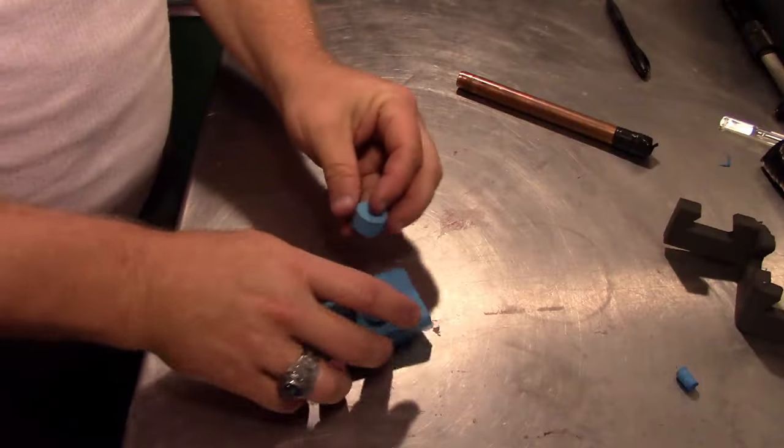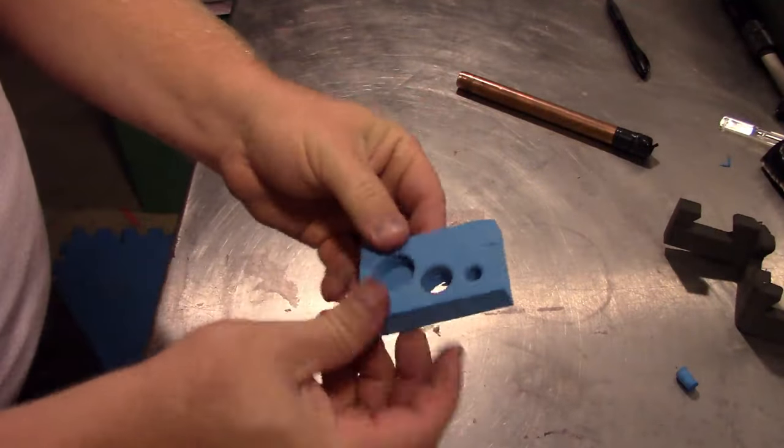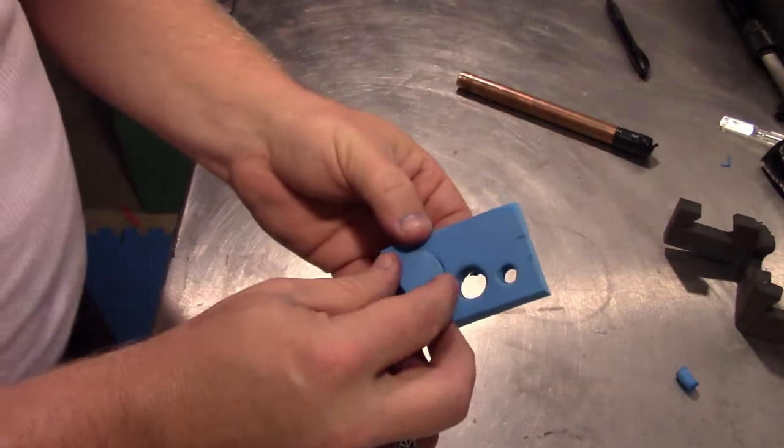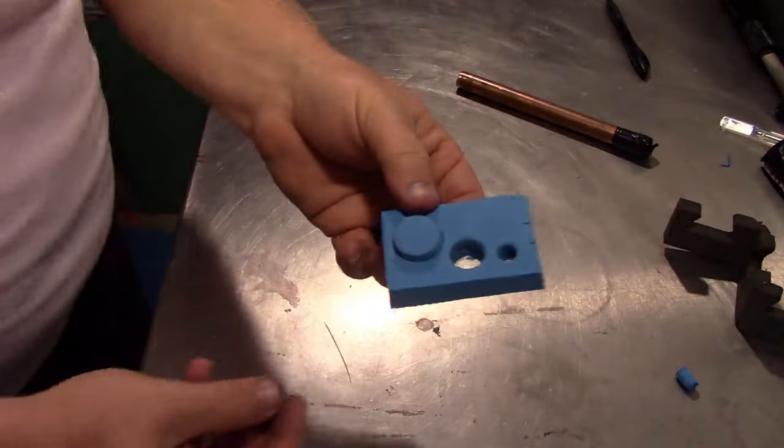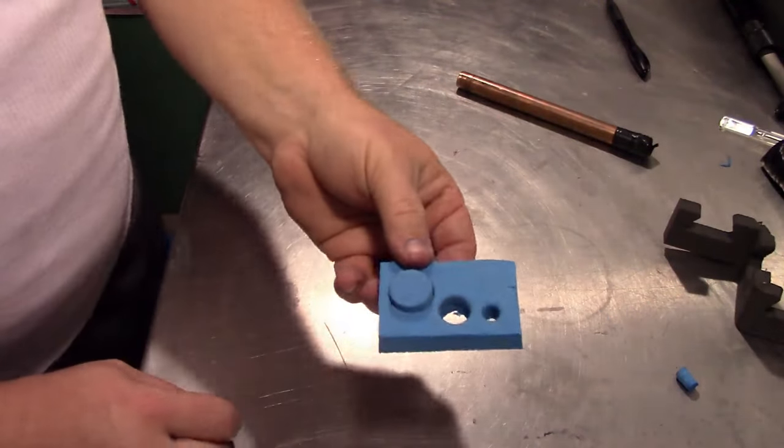Now another thing you can do with these is you can put this back through, pop it up a little bit, hit it with some hot glue in the back. Now you've got a button. You've got a button on a piece of armor.